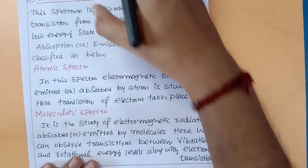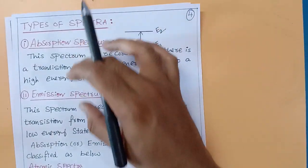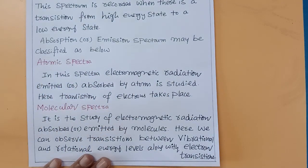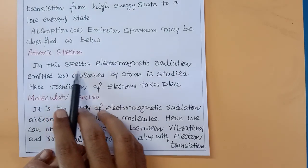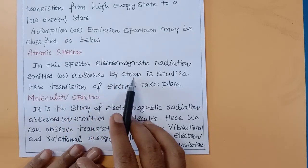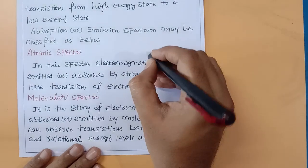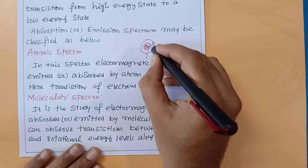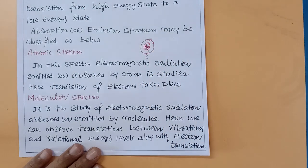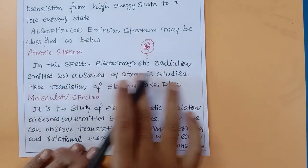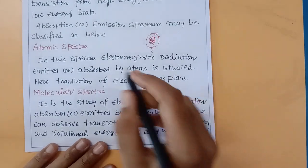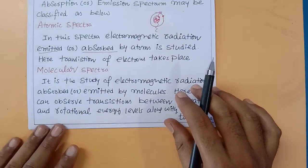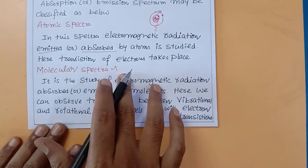Absorption and emission spectra may be classified further. The first category is atomic spectra: here, electromagnetic radiation is emitted or absorbed by atoms and is studied. In this spectra, the transition of electrons takes place. Atoms have various orbitals with electrons; when electromagnetic radiation is applied, electrons move from the ground state orbital to a higher energy orbital. This type of spectra is called atomic spectra.